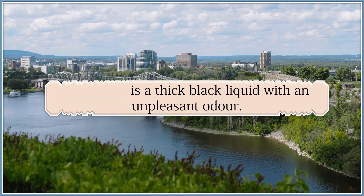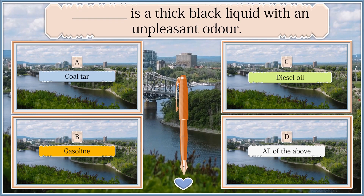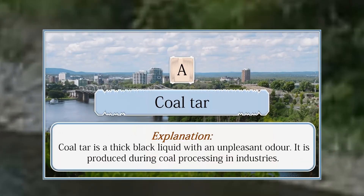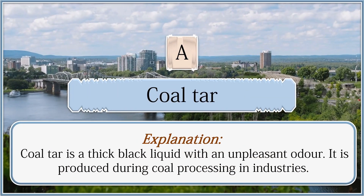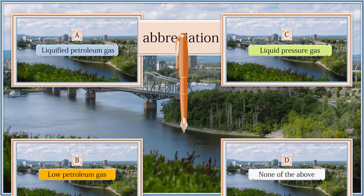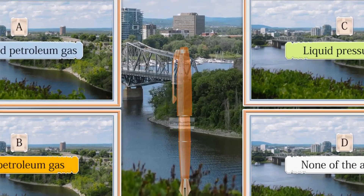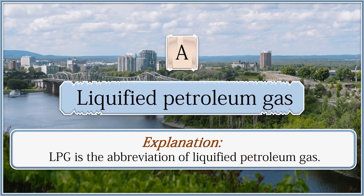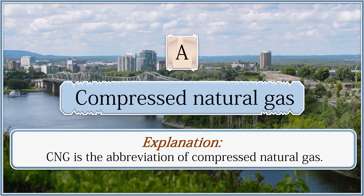The answer is beeswax. Kerosene, pitch black, and gasoline are formed as by-products during petroleum refining. In contrast, beeswax is a natural source of wax created by honey bees.